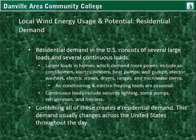Residential demand is probably what fluctuates the most. It consists of very large loads and several continuous loads. The larger loads in homes include air conditioners, heaters, heat pumps, well pumps, basically any large motor, also electric stoves, electric ranges, dryers, ovens, and microwave ovens. Air conditioning and electrical heating loads are seasonal, so that has to do with the yearly change in demand.